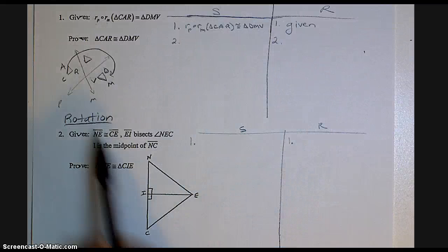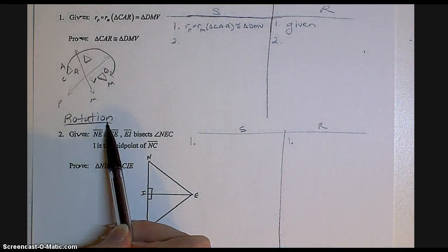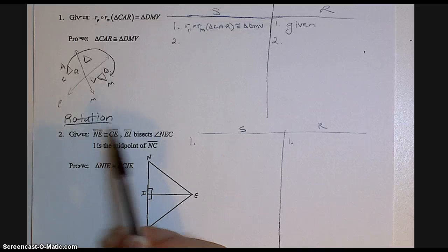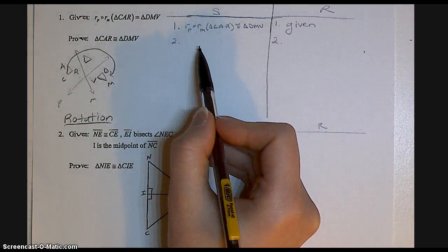And then we know in a rotation, two main things are preserved. One is angle measure, and the other one is distance. So it doesn't matter which one you pick first.